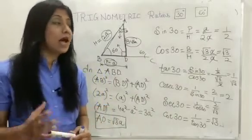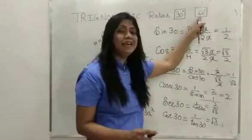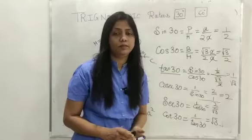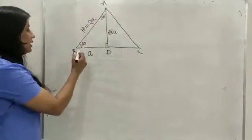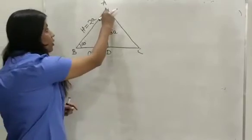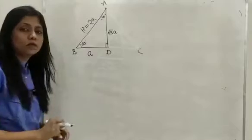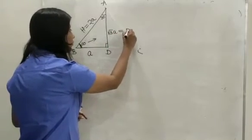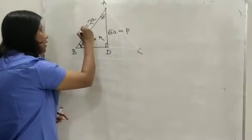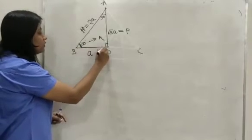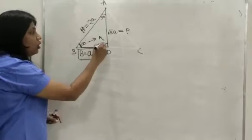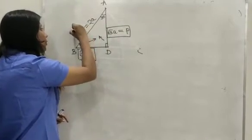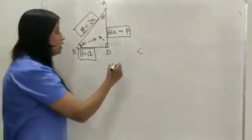Now we will find the 6 trigonometric ratios for the 60 degree angle. We will now consider this part of the triangle. Since we are considering theta as 60 degrees, the side opposite to 60 degrees is the perpendicular, the side opposite to 90 degrees is the hypotenuse, and the side adjacent to 60 degrees is the base. So the base is A, the perpendicular is root 3A, and the hypotenuse is 2A.